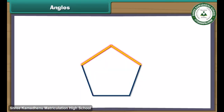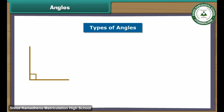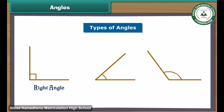Any two adjacent sides of a polygon form an angle between them. An angle is the space between two lines, line segments or rays that move away from one another from a common point. The measure of an angle is specified in degrees. The three types of angles are right angle, acute angle and obtuse angle.